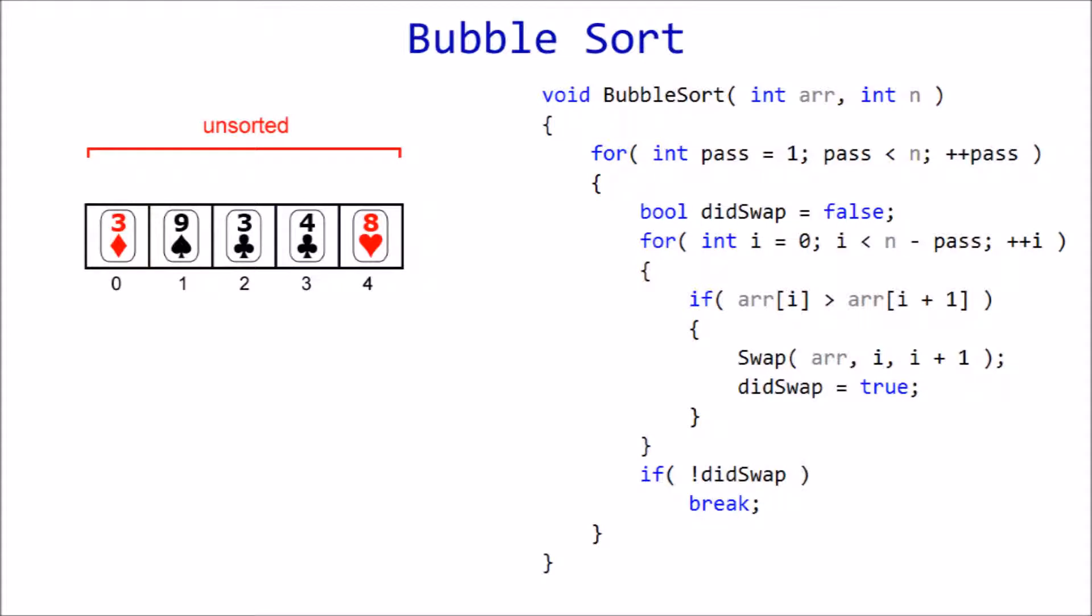Now we'll walk through this same process with some actual C++ code and a different set of cards. Let's jump right in. If it's not already clear, n equals the number of elements in the array, in this case, five.